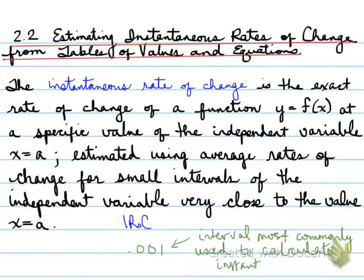What that means is we're going to use 0.001 as our tiny interval. So can you imagine how small it is — if you're going from 1 to 2, we're using a 0.001 interval. That's a very, very small interval to indicate the instantaneous rate of change.